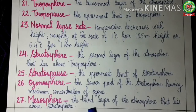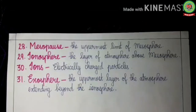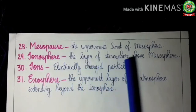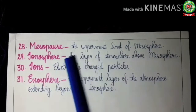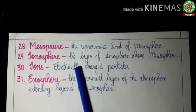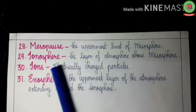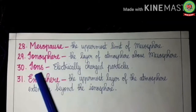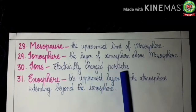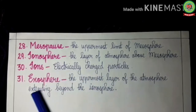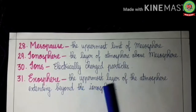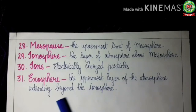Mesosphere: the third layer of the atmosphere that lies above the stratosphere. Mesopause: the uppermost layer of mesosphere. Ionosphere: the layer of atmosphere above the mesosphere which has ions — ions are electrically charged particles. Exosphere: the uppermost layer of the atmosphere extending beyond the ionosphere.